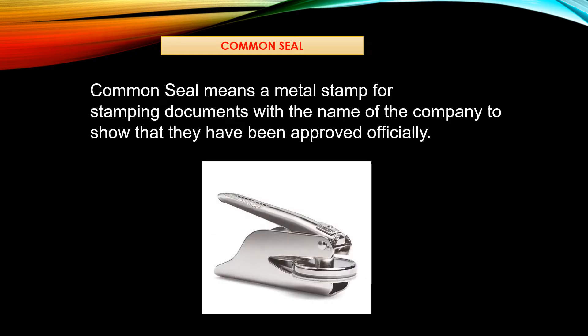Common seal is a metal stamp used in documents for stamping. This is to prove that the documents are officially approved on behalf of the company. Common seal is an inkless stamp. It looks like a stapler. Common seal means a metal stamp for stamping documents with the name of the company to show that they have been approved officially.